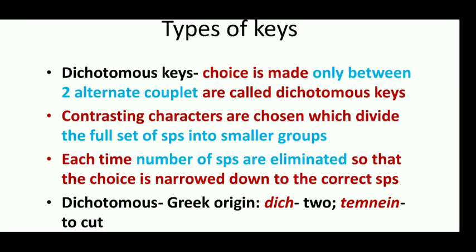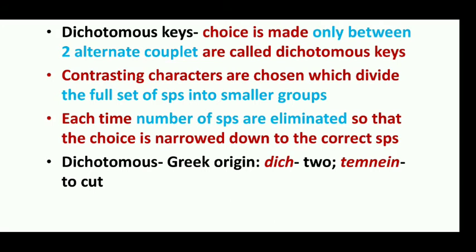Now the types of key. One is the dichotomous key, where a choice is made only between two alternative couplets. Dichotomous means two choices — for identification, there will always be two choices, and out of two, one will be decided. The contrasting characters are chosen to divide the full set of species into small groups. As we go deeper, the number of species is eliminated so that the selection becomes easier.